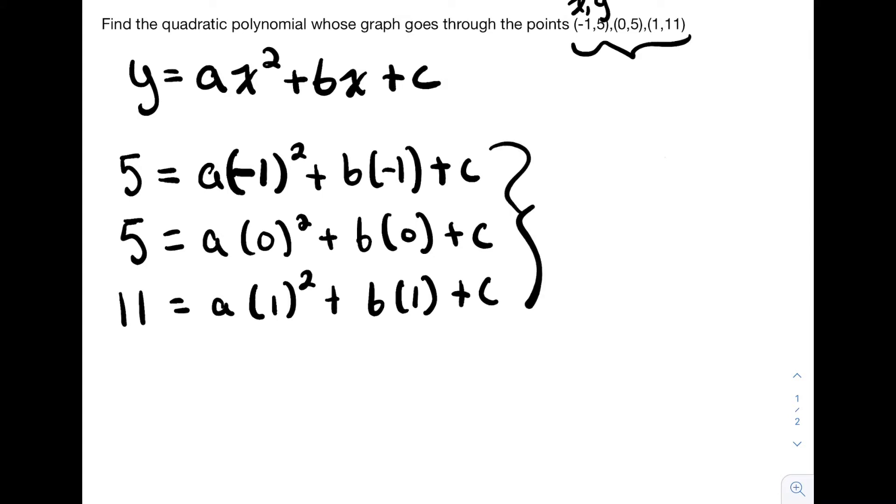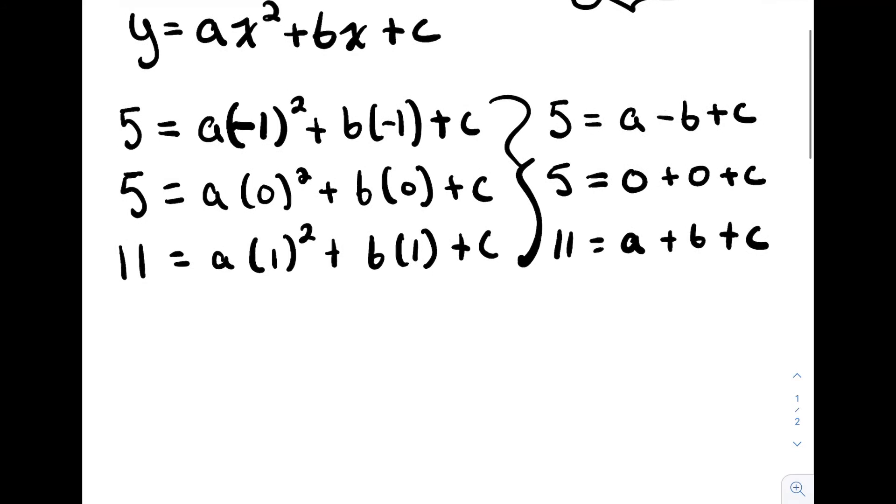So let's evaluate all of these statements. Our first statement will give us 5 equals a minus b plus c. Our second will evaluate to 5 equals 0 plus 0 plus c. And our last one will give 11 equals a plus b plus c. So now we have these three formulas.